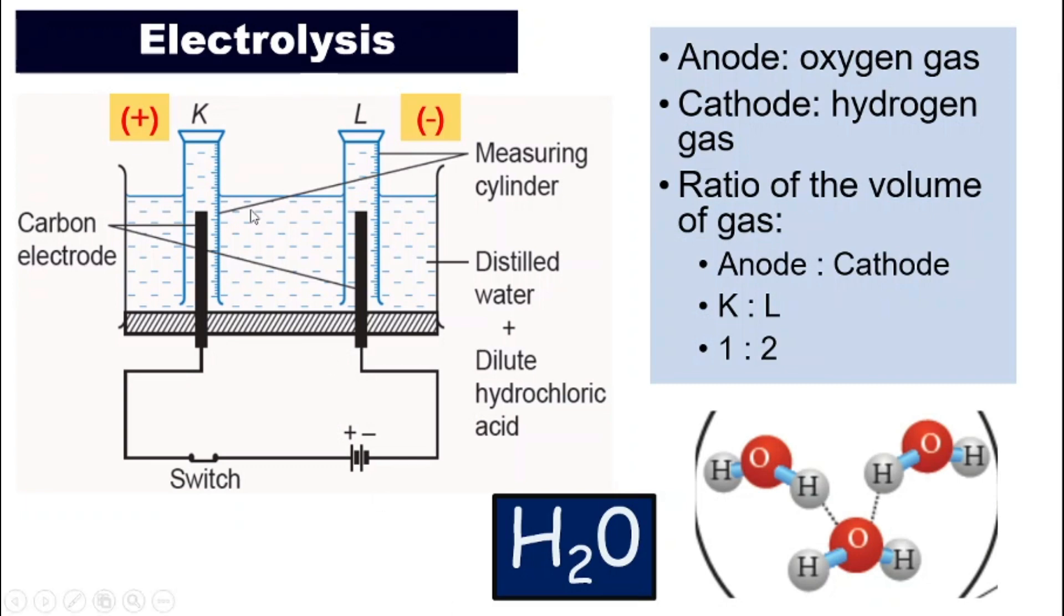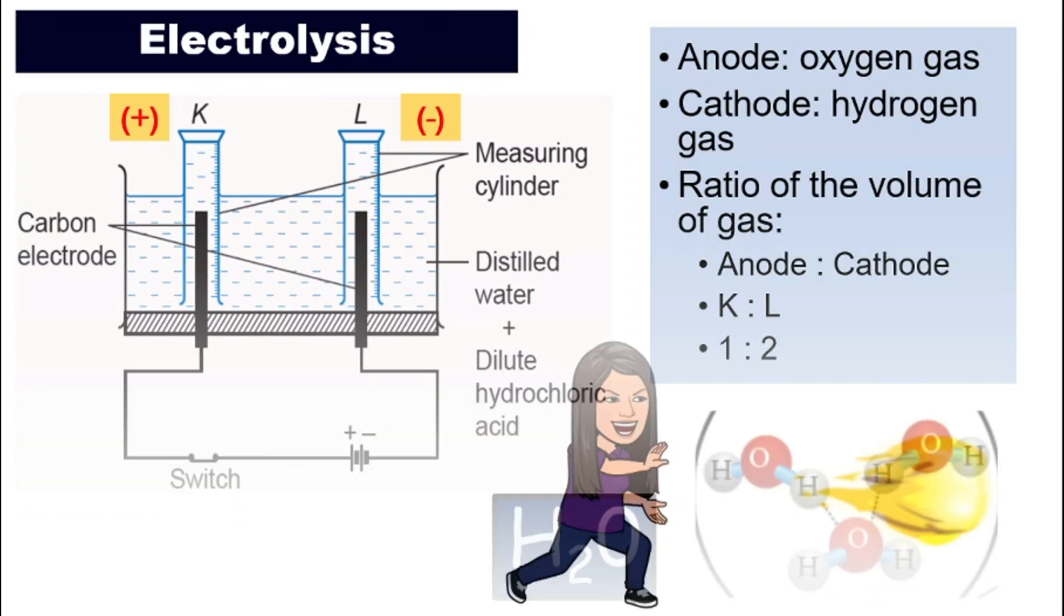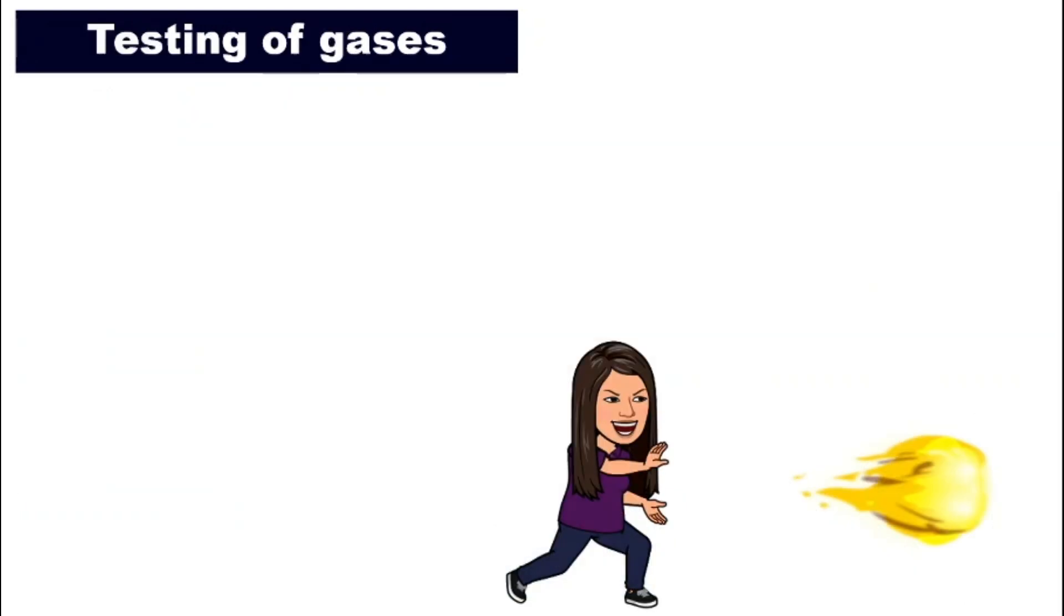Next, how do I know that the gases that is collected, or the gas that is collected in K, is definitely oxygen and L, or hydrogen? Because both gases that we collect have no color. They look the same. How do I know if they are really oxygen or hydrogen? That's where we need to do the testing for these gases. So for oxygen, how do we test the gas?